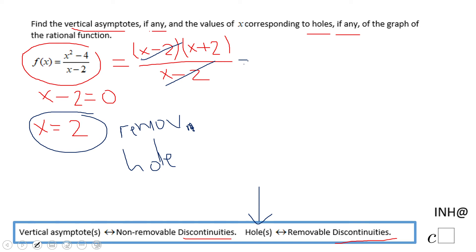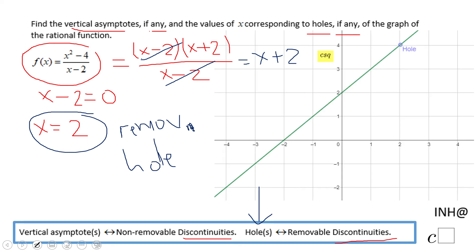And by the way, the simplified form of this rational function is x plus 2. So I expect to get a line with a slope of one and a y-intercept of two with a hole at x equals 2. And you notice the line and also a hole right here at x equals 2.